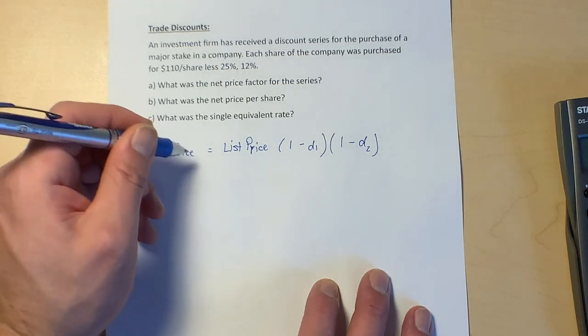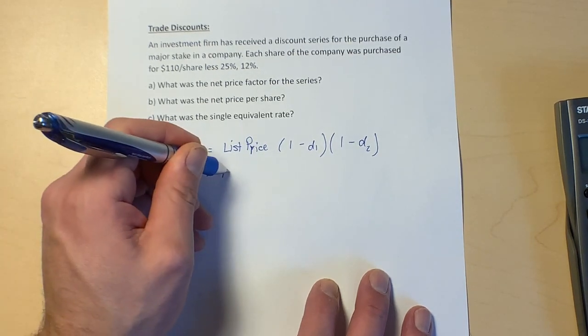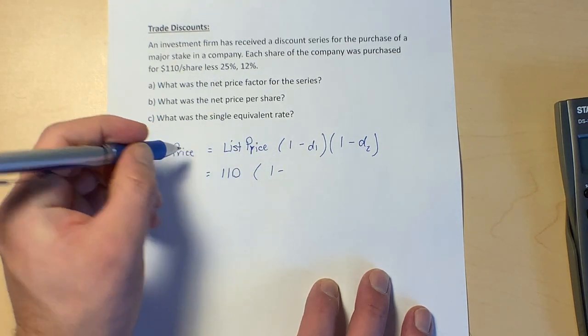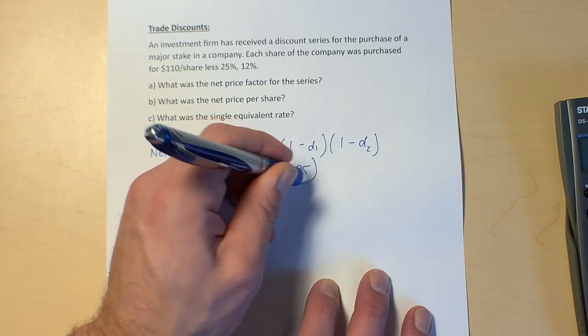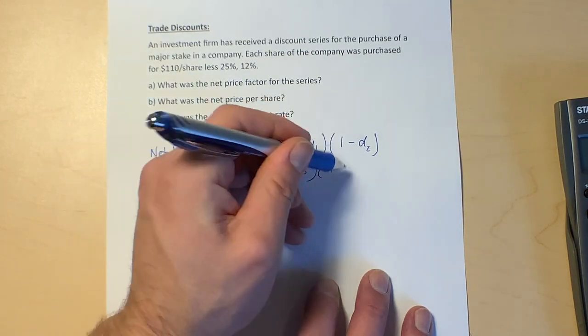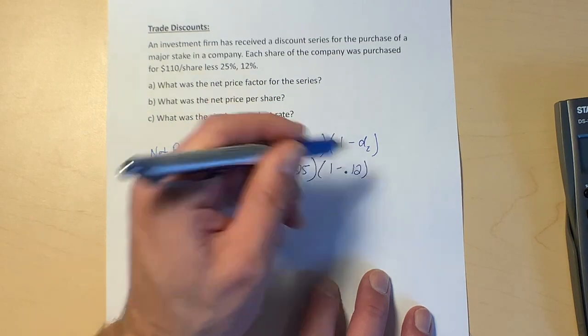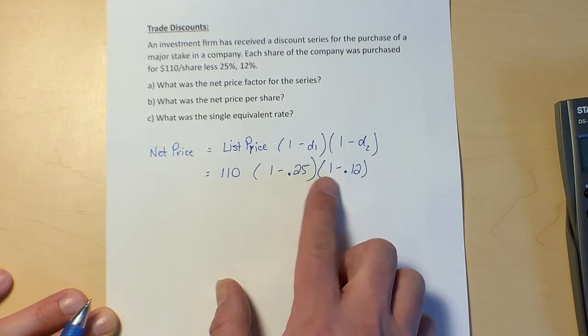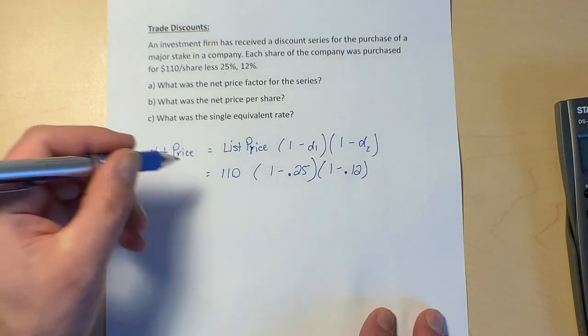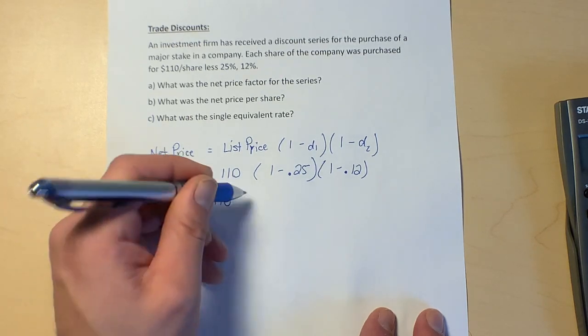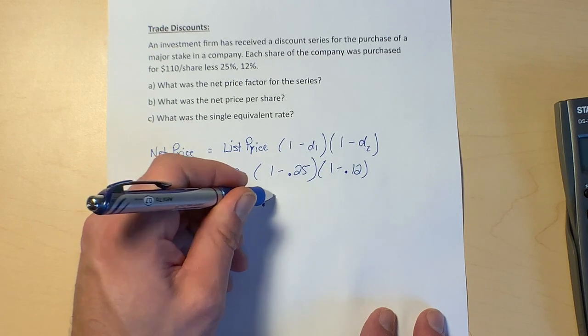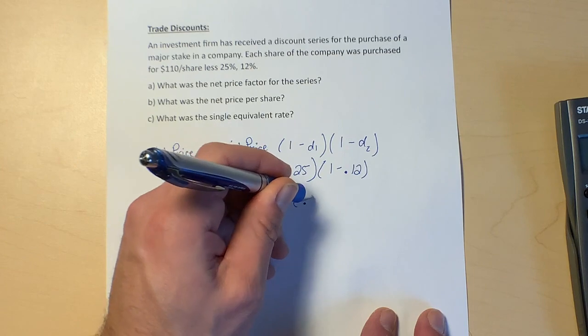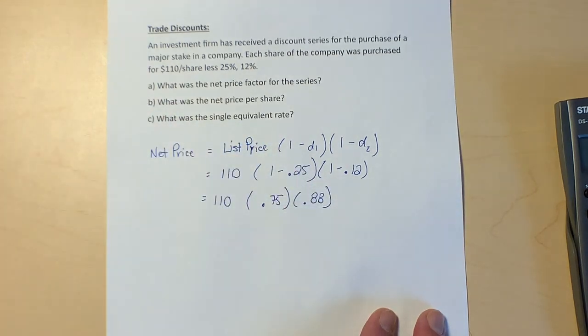Let's put those things in. Our list price is $110, we're going to say one minus 25%, so 0.25, and one minus the second discount of 0.12. I'm going to do just a little bit of cleaning up. I'm just going to answer those things in the brackets there—I'm not going to do any multiplying, just subtraction. One minus 0.25 gives us 0.75, one minus 0.12 gives us 0.88.